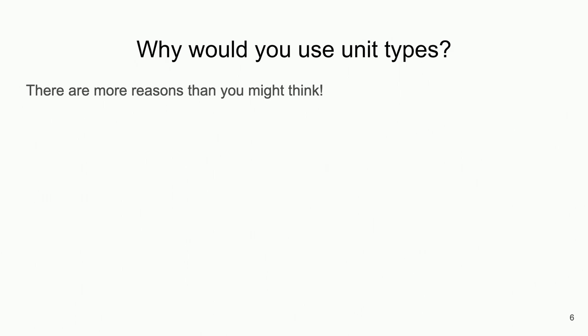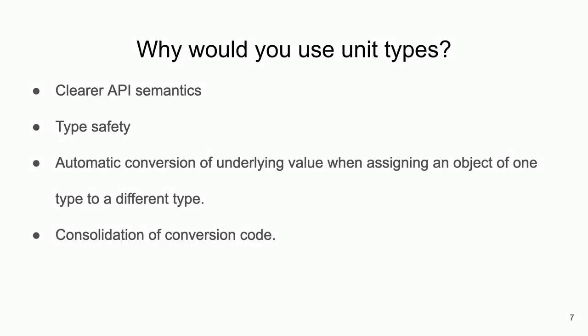Why would you want to use units in your code? Ints and floats kind of work everywhere, but there are a few compelling reasons. If you use unit types, you get clear API semantics — no longer do you have parameters named 'time' or 'time in seconds'; your actual parameter type is seconds. That gives you type safety. And if you have types that can convert between each other, similar units with conversions, you can automatically convert from one type of unit to another, clearing up a lot of boilerplate and making your code easier to read.